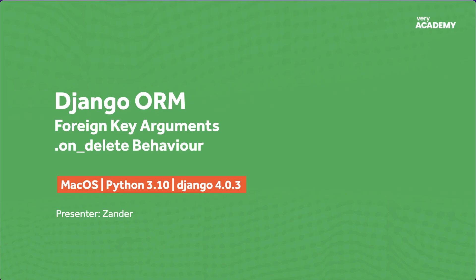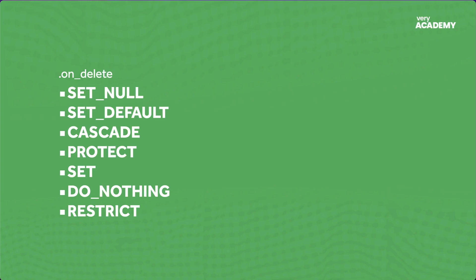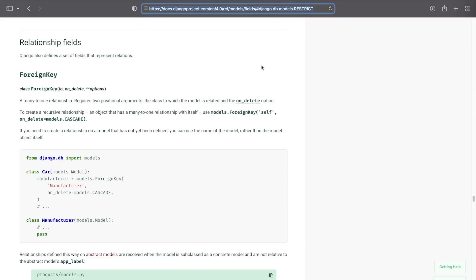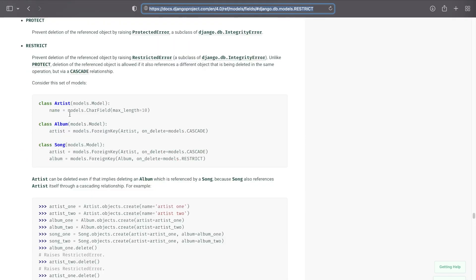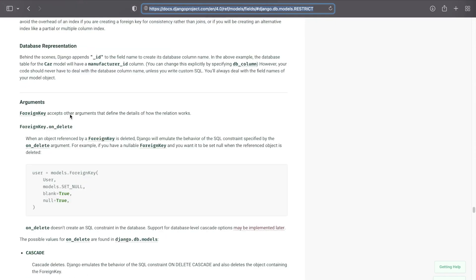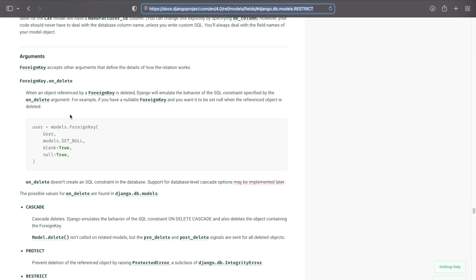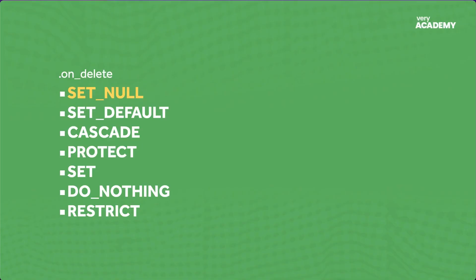There are seven possible actions or behaviors to adopt when the foreign key reference object is deleted. In this tutorial, I'm going to take you through each option step by step, providing an example of each. You can also read the Django documentation under model fields and relationship fields, which covers the seven options with small examples, but this tutorial is meant to provide concrete examples to support that documentation.